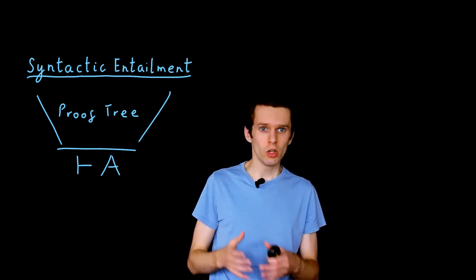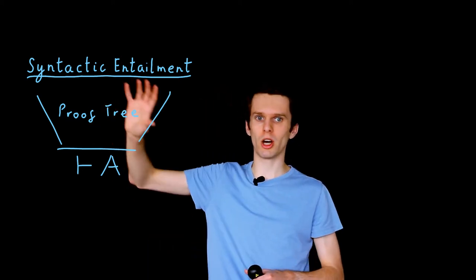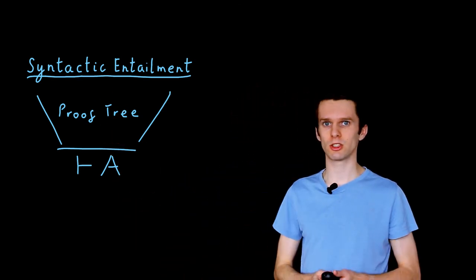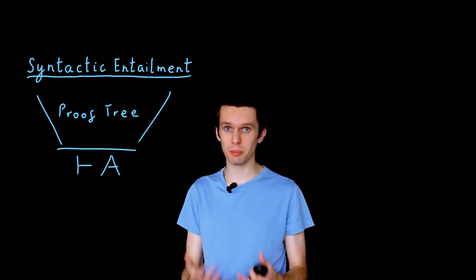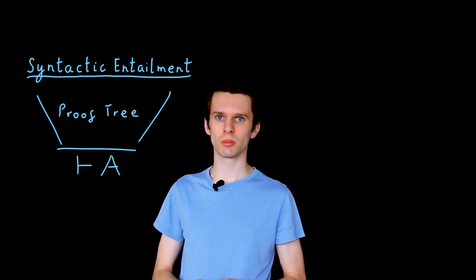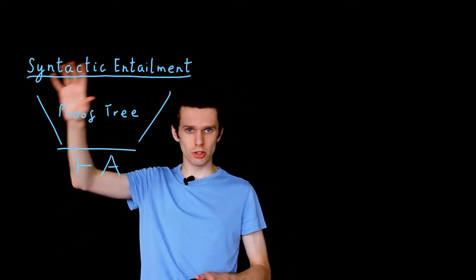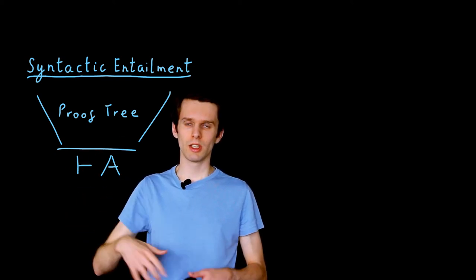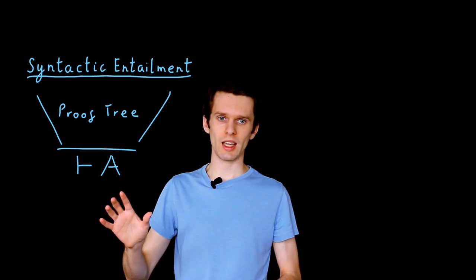In the last video we saw how the rules that comprise these proof trees are inspired by the semantics and effectively implement the semantics. And we claimed that if we could construct a proof tree, if we have syntactic entailment, then our proposition A is true in the semantics.